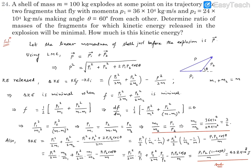Question number 24. A shell of mass 100 kg explodes at some point on its trajectory into two fragments that fly with momenta P1 and P2, making an angle theta of 60 degrees from each other. We need to determine the ratio of masses of the fragments for which the kinetic energy released in the explosion will be minimal, and also how much that kinetic energy is.